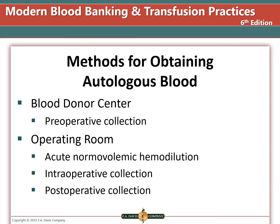The donor center can collect units prior to surgery for autologous donation. The three other methods are performed by personnel trained in these fields specifically. These include acute normovolemic hemodilution, intraoperative blood salvage, and postoperative collection from chest tubes or surgical drains.